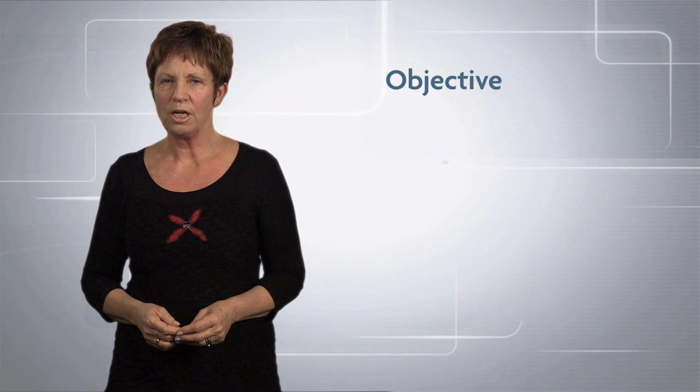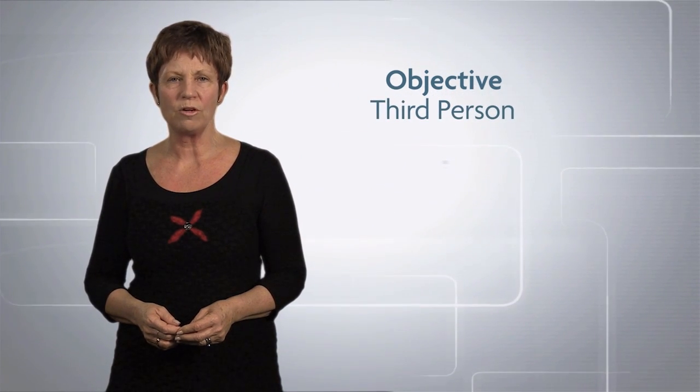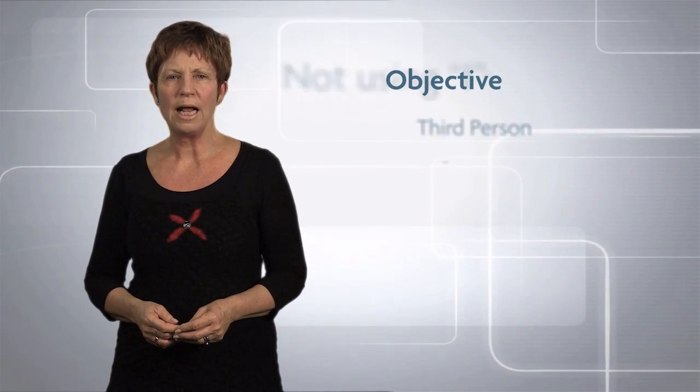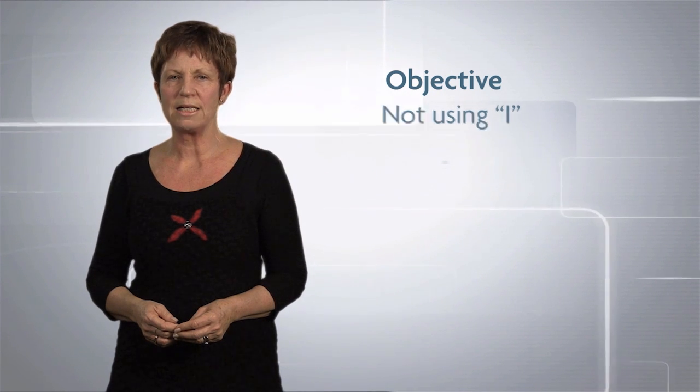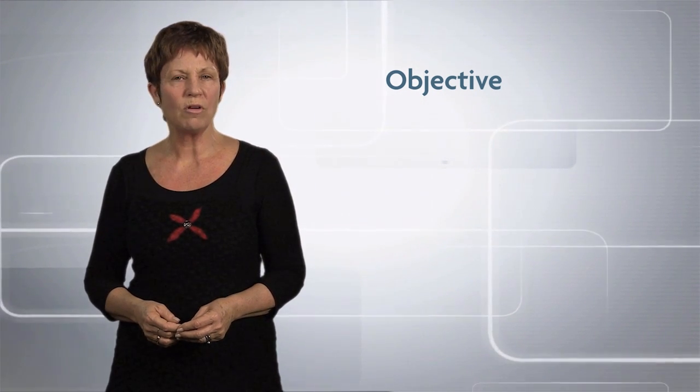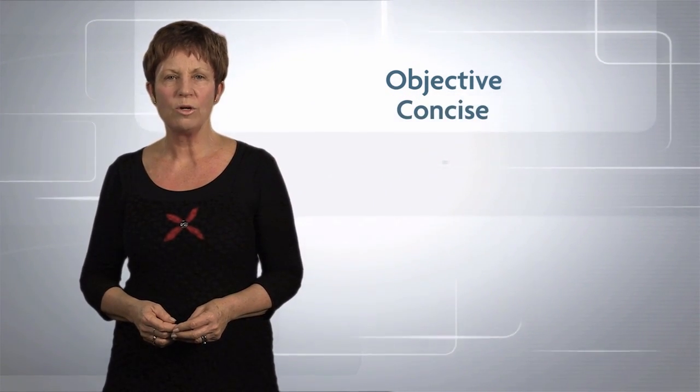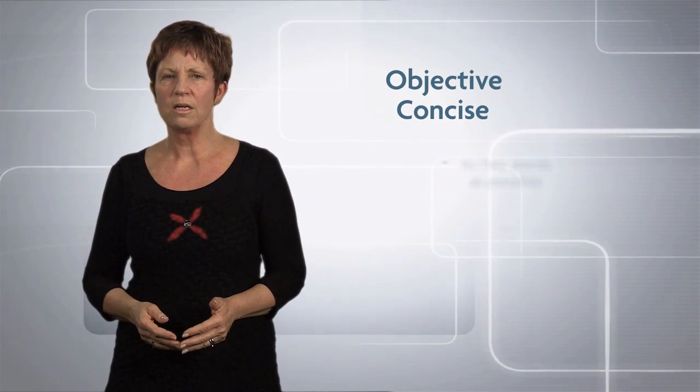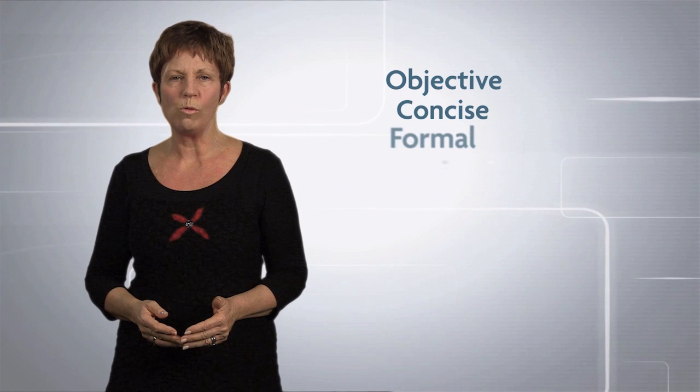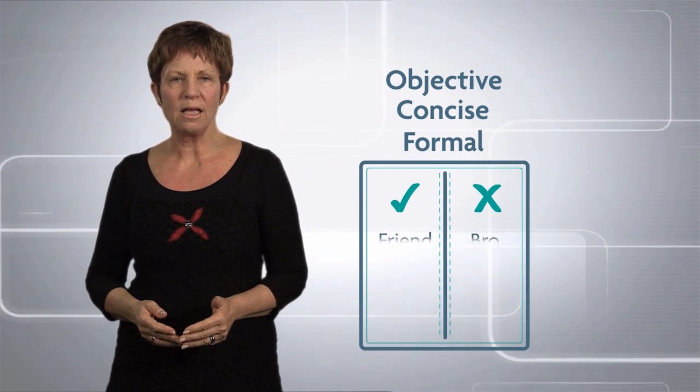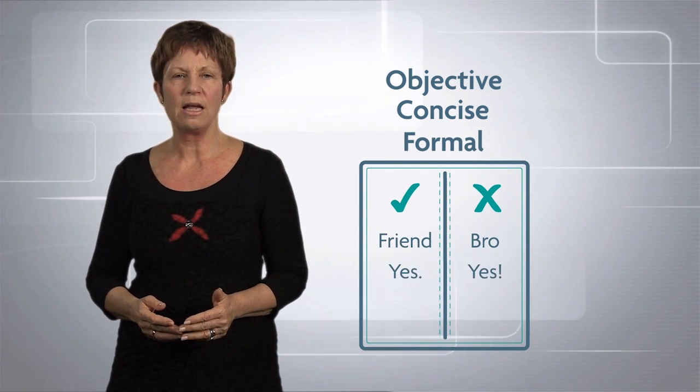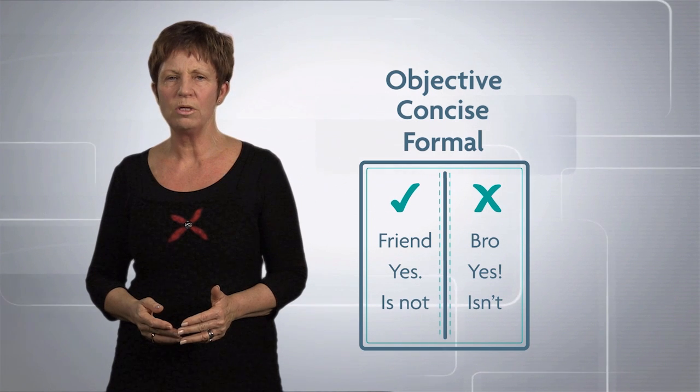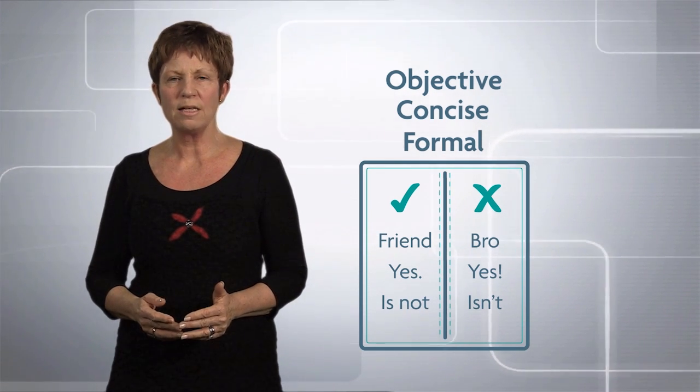Like all forms of writing, academic writing has its own tone and is usually objective, which means writing in the third person rather than the first person, and not using the word I in your writing. Academic writing is also concise, which means using as few words as possible to get your points across. And academic writing is formal, which means avoiding slang, exclamation marks and contractions, for example, writing is not instead of isn't.